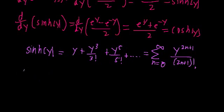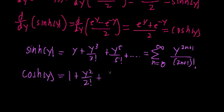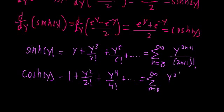Similarly, the series expansion for hyperbolic cosine is 1 plus y squared over 2 factorial plus y to the 4th over 4 factorial and so on, which we can rewrite as the sum from n equals 0 to infinity of y raised to the 2n over (2n) factorial. Again, this is a lot like the series expansion for cosine, with the only difference being the absence of the alternating minus sign.